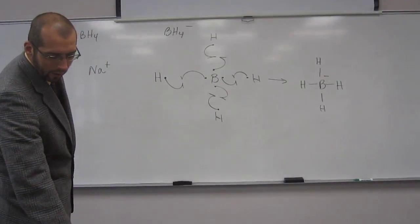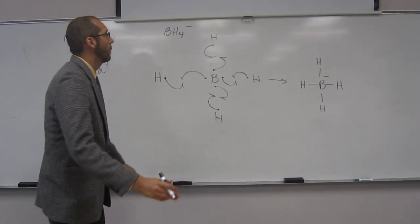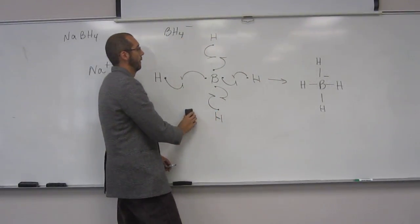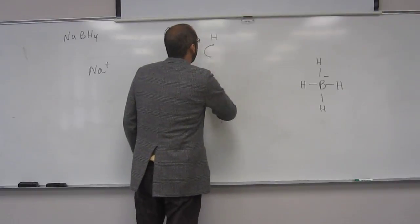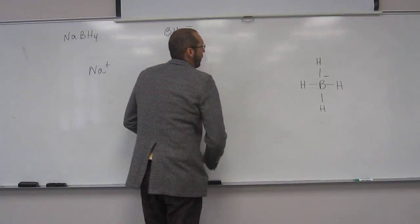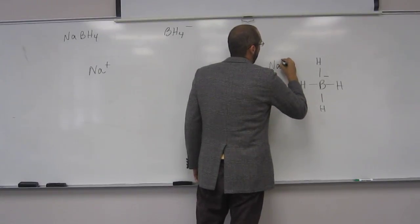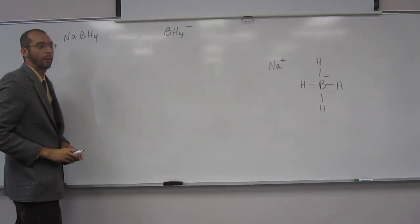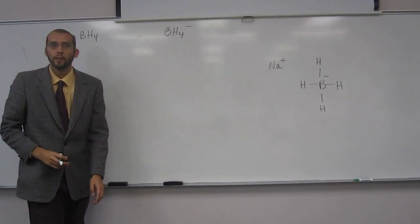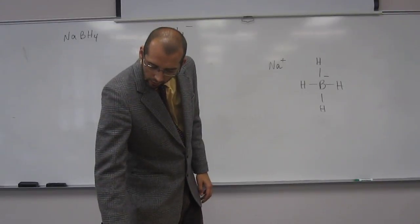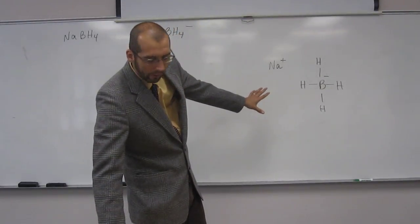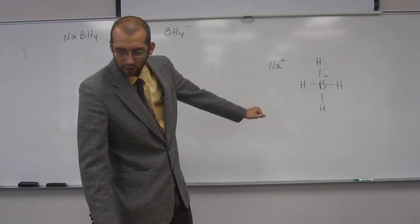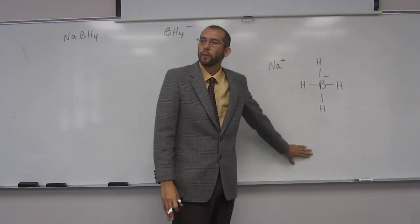So, that's the Lewis structure showing all atoms. So if you wanted to, you can do something like that just to emphasize the close proximity between the two ions. Showing all atoms, all valence electrons, all formal charges for the following species. So that's it.